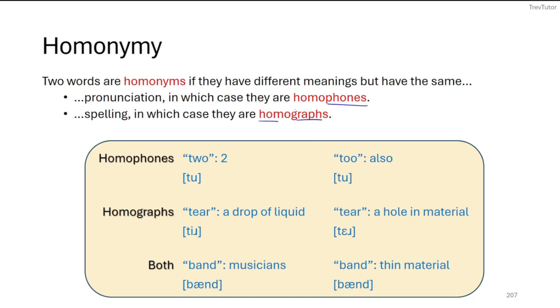Some examples of just homophones are two and too, as in the number two and as well. You can see they're pronounced exactly the same, but they are spelled differently. In the case of homographs, tear and tear are spelled the same, but their pronunciation is different. So that's why we call these homographs. Now it is possible to have both. So in band and band, they're both being pronounced the exact same way, but they have two different meanings. One where we have a musician and one where a band is like a thin material, like a rubber band, for example.